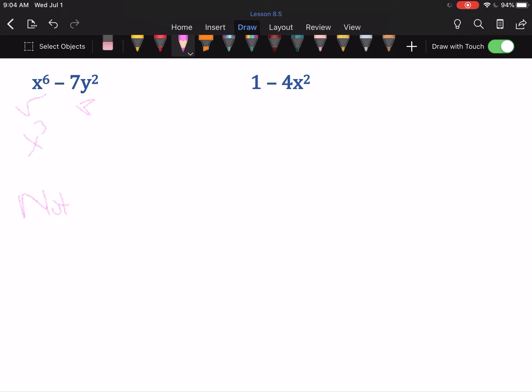So this is not difference of squares. And why? 7y² is not a perfect square. The 7 causes the problem.